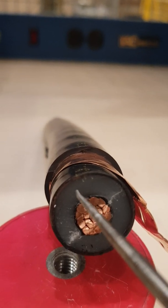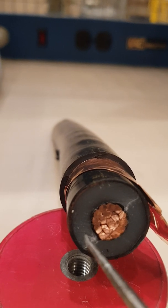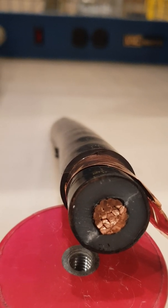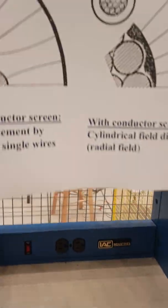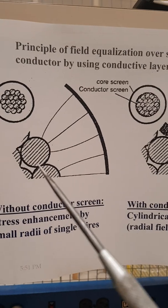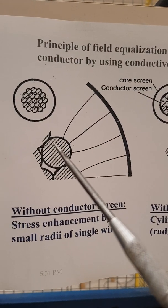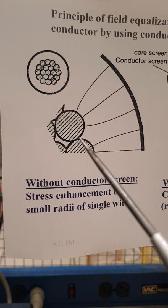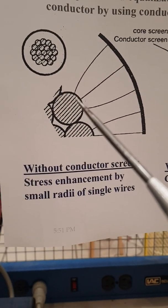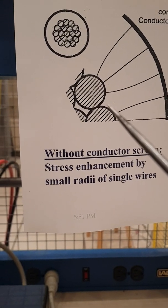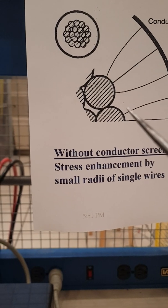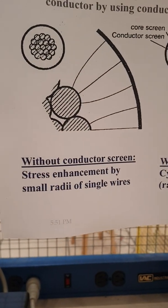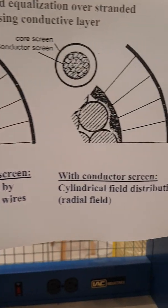If we zoom in, you will see there is a black tape around the conductor. This black tape is made from semiconductor material and serves a very important purpose. Without it, looking at the field lines around the strands, you can see the field lines are closer together in some areas and farther apart in others, so the electric field on the surface is not uniform. This means certain areas will have higher electrical stress, which might trigger some sort of partial discharge.